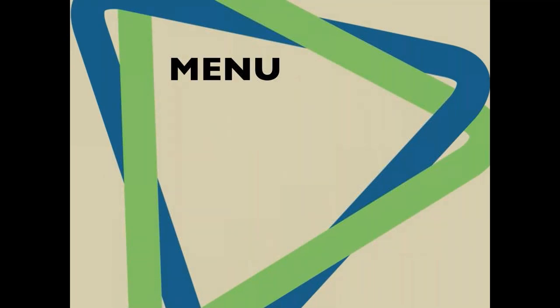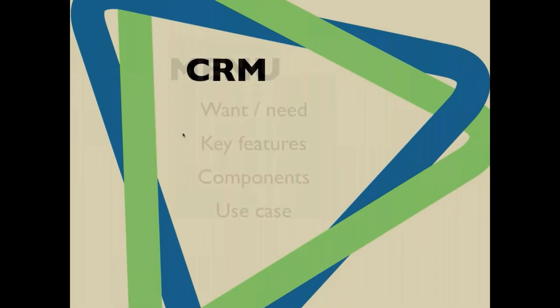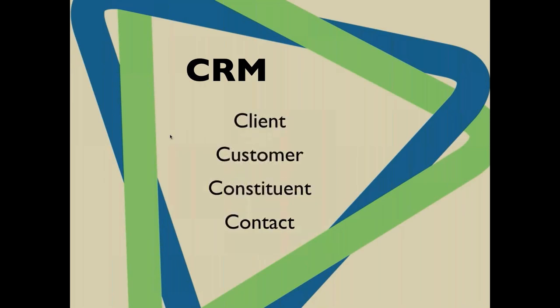The agenda today covers why you would need a CRM system, what features may interest you, and what some of the components of CVCRM are specifically. Then we'll look at a couple of use cases for our own clients. There's a little debate in the community about what the C stands for in CRM. At a very base level it's 'contact.' It can also mean client, customer, or constituent, but most people think of it as a contact relationship manager system.